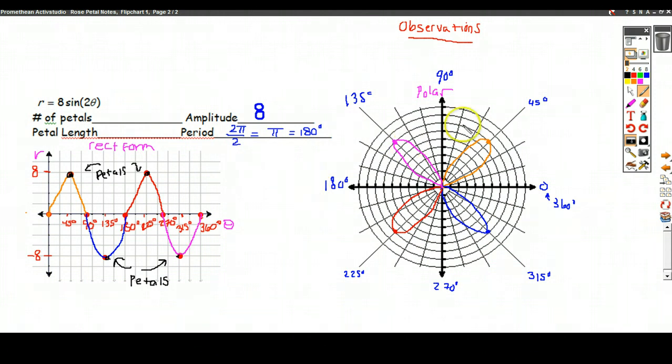That's one observation. The other thing is, as usual, the petals are evenly spaced. In this case, 45 degrees to 135 degrees, that's a spacing of 90 degrees. These are spaced 90 degrees, 135 to 225. These are spaced 90 degrees. And these are spaced 90 degrees.